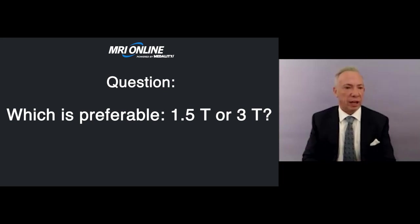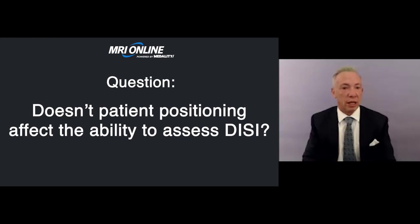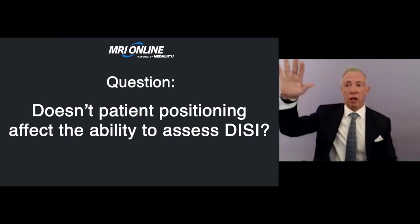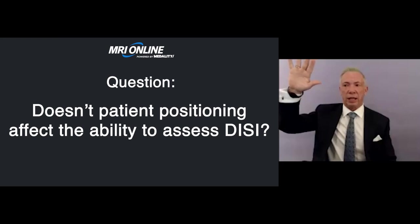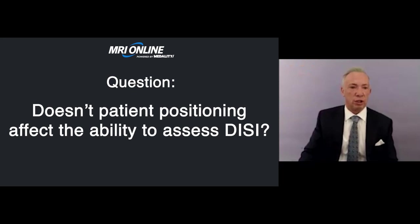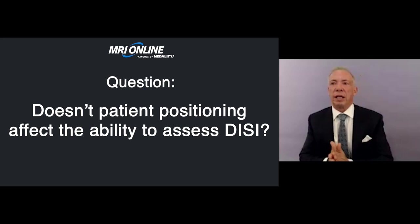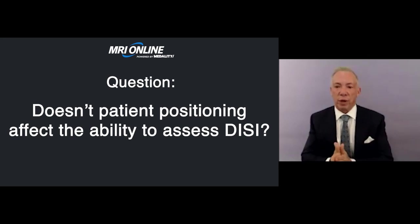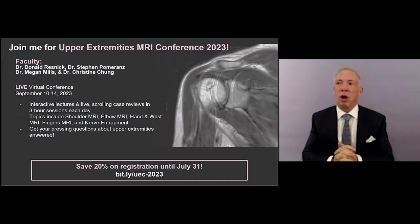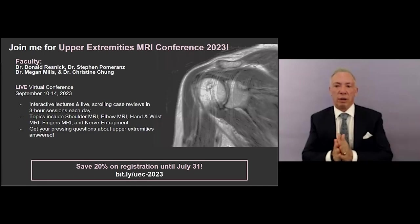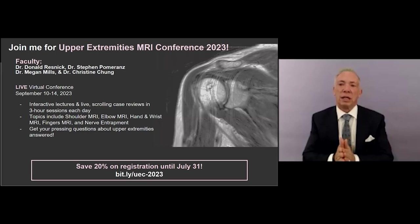Patient positioning absolutely affects the ability to assess DISI. You need the wrist straight — if you ulnar deviate you'll create pseudo-DISI, and if you radial deviate you'll also create pseudo-DISI. Thank you for your thoughtful questions and I hope to see you all in September for the combined Resnick, Pomerantz, Chaga and colleagues course. Have a great day.